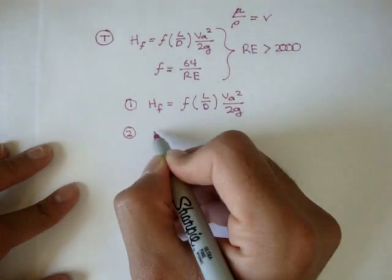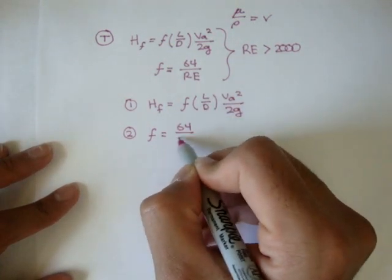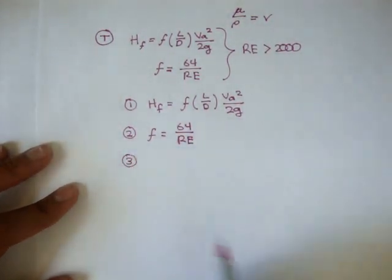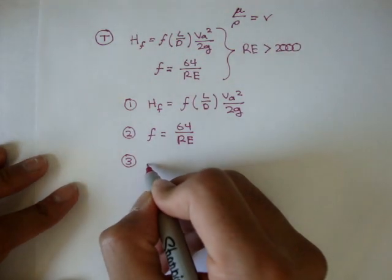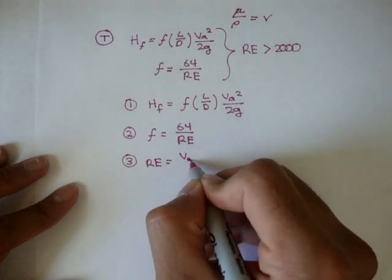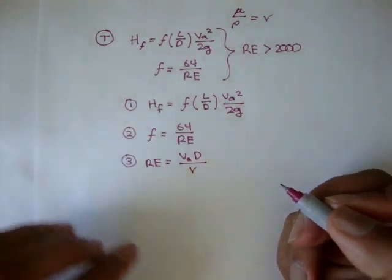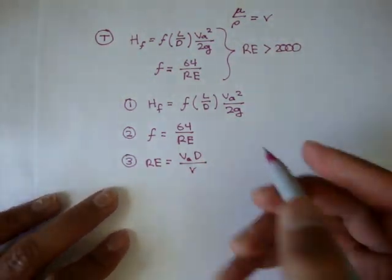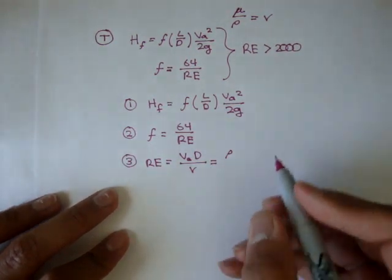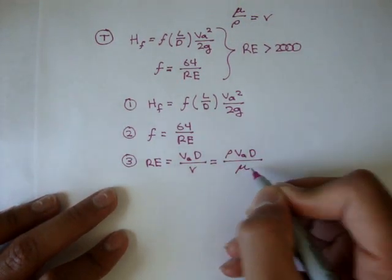The second formula is the frictional factor equals 64 over the Reynolds number. The third formula is the Reynolds number itself: the Reynolds number equals the average velocity times the diameter of the pipe all over ν, the kinematic viscosity. This is also equal to ρ times the average velocity times the diameter of the pipe over ν.